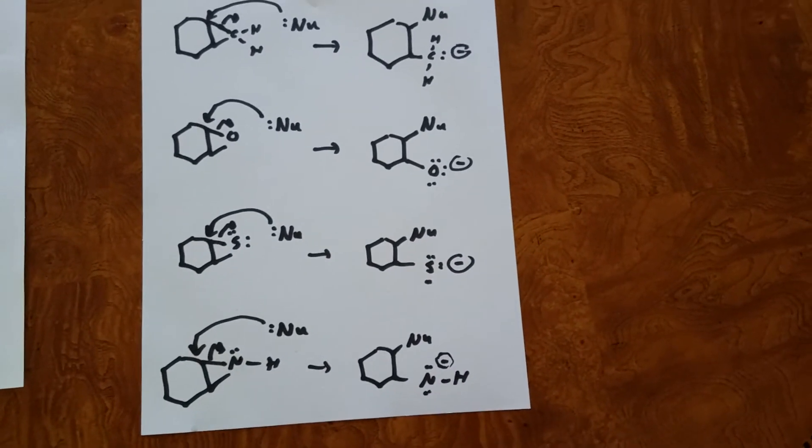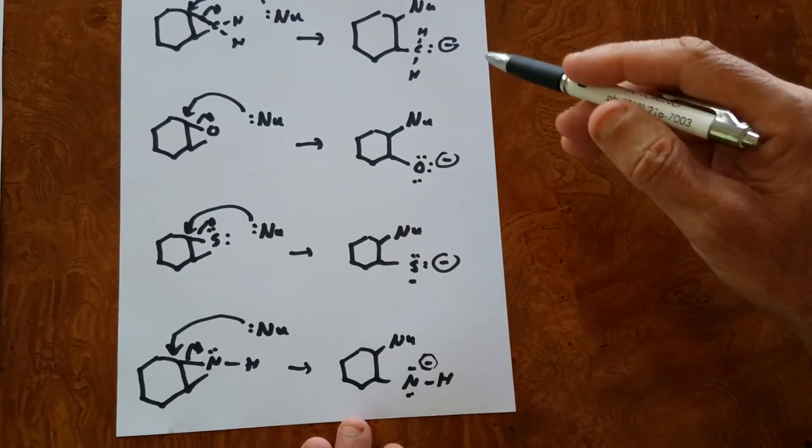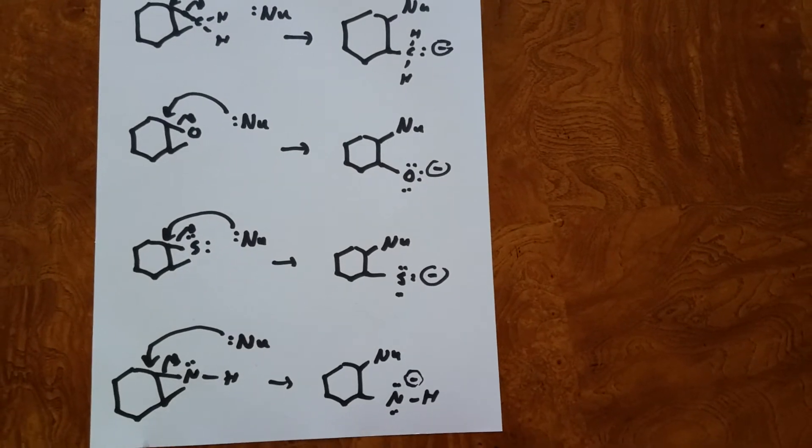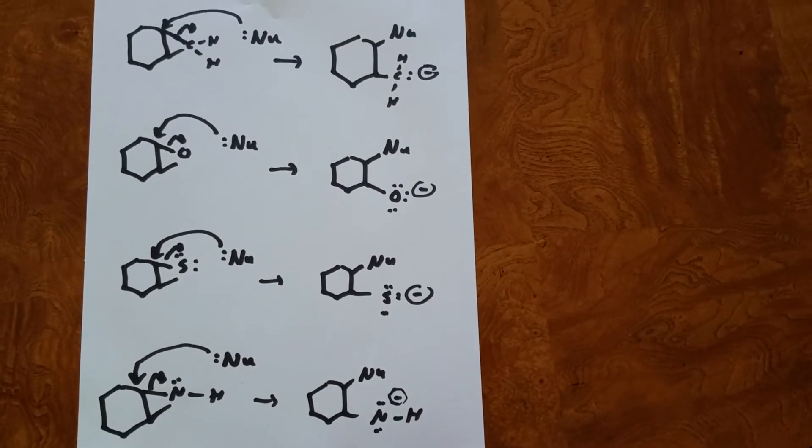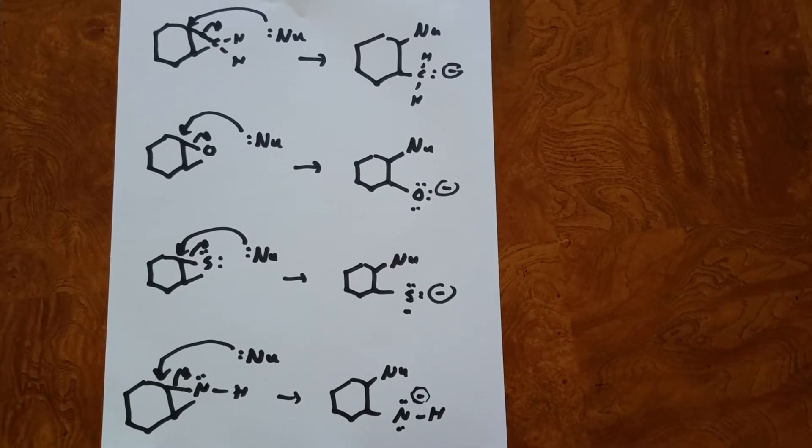Well, we have a rule. If you're going down a group, the size is the most important. As you're going across the table, the most important thing is going to be the electronegativity.